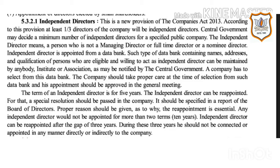The term of an independent director is five years. The independent director can be reappointed, for which a special resolution must be passed and it should be specified in the board of directors' report, with proper reasons given for why reappointment is essential. An independent director cannot be appointed for more than two consecutive terms, totalling 10 years. After that, an independent director can be reappointed only after a gap of three years, during which they should not be connected in any manner, directly or indirectly, to the company.